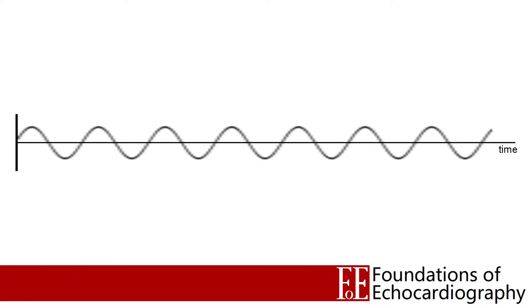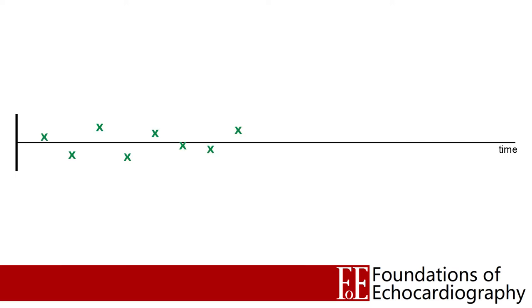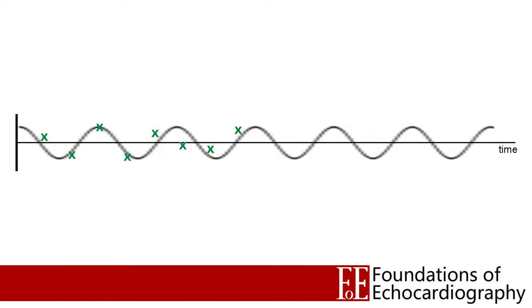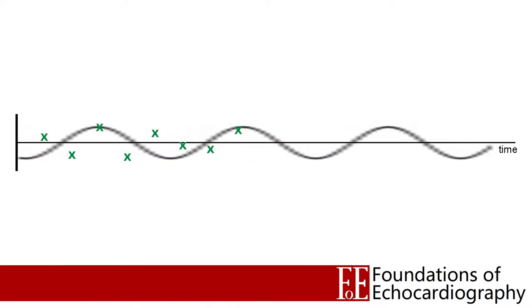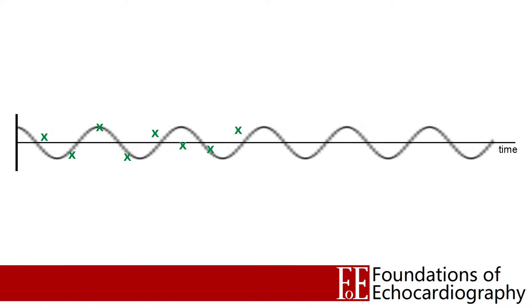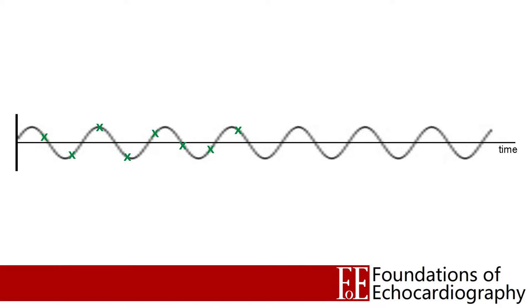Let's imagine there is a wave returning to our probe and we want to work out the frequency of that wave. If we can see the whole wave it's relatively straightforward — we work out the duration of one period, the time between two peaks, and then our frequency is simply the reciprocal of this. If we sample the returning wave's amplitude at regular intervals, we might be able to build up a picture of what that wave looks like. So here we have eight green axes, and by knowing the position of these eight sample points we're able to describe the wave which must have created them. As long as on average we have greater than two sample points per period, it's not possible to confuse our wave with one of lower frequency.